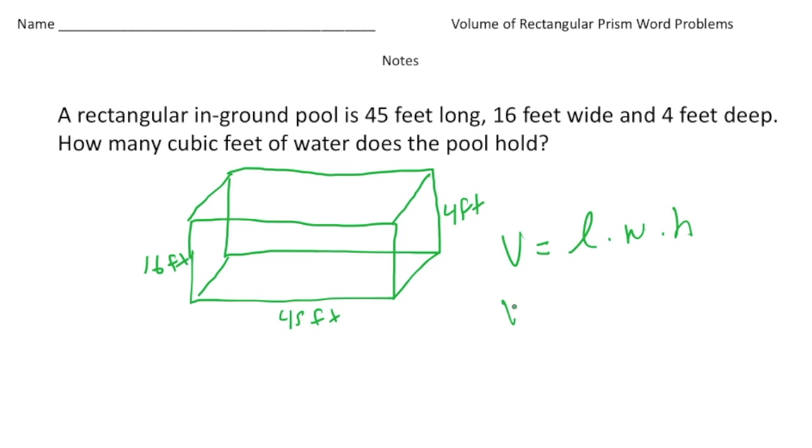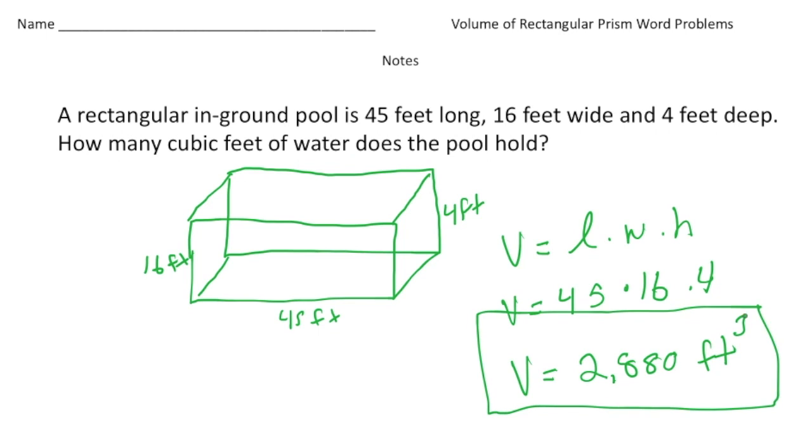So volume is going to be 45 by 16 by 4. And when I do 45 times 16 times 4, I get 2,880. So the volume of the pool is 2,880. And this is going to be cubic feet of water. So that's the capacity of the pool. And there it is.